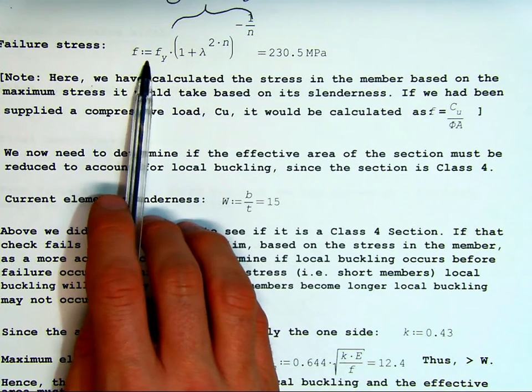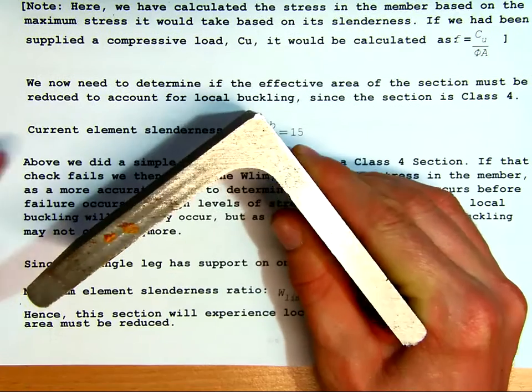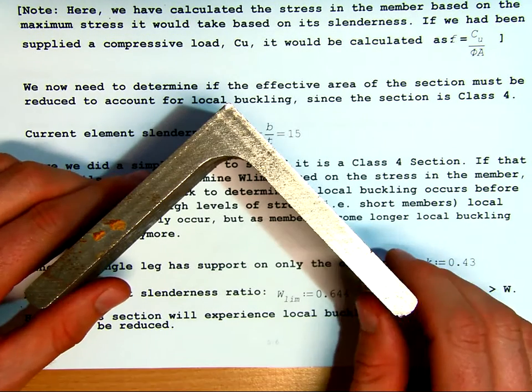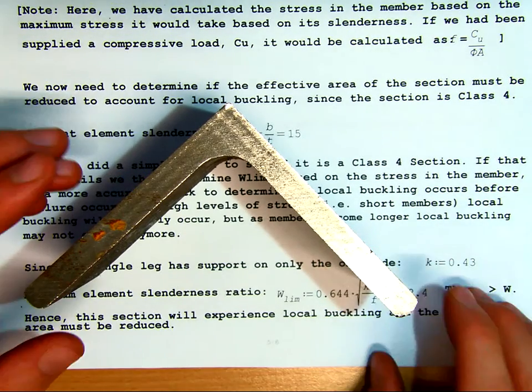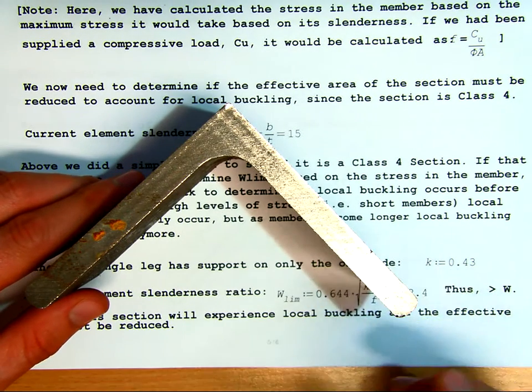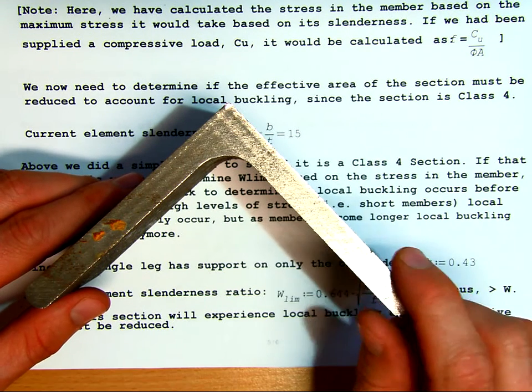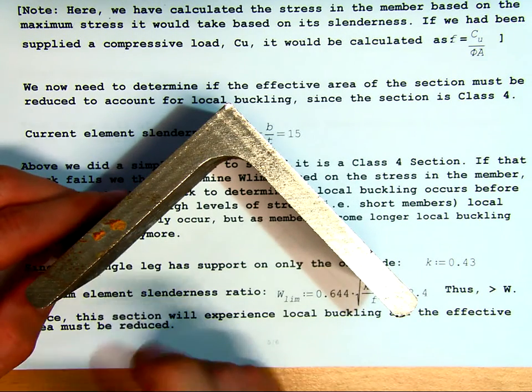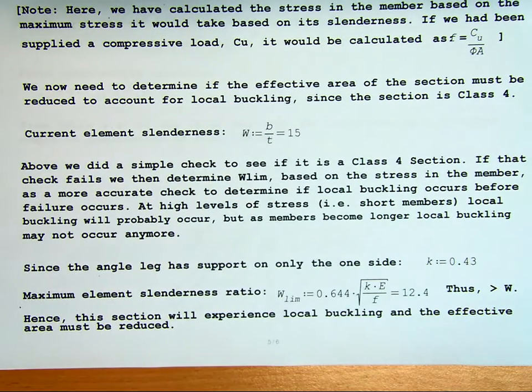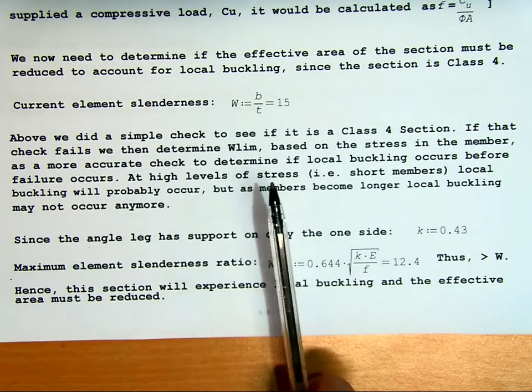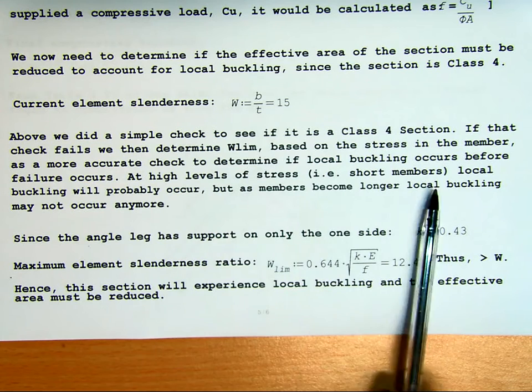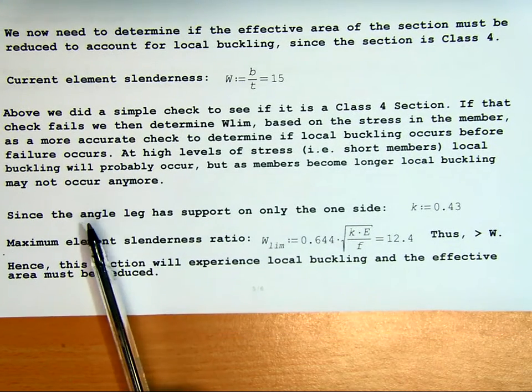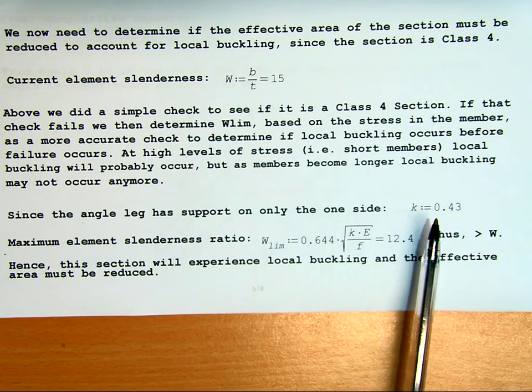As the stress in the member increases at failure, it's more likely to experience local buckling. Let's say we've got this angle here, and it's 2 meters long, it might fail at a certain stress. If it comes down to our 0.75 meter angle we're looking at, it's going to fail at a much higher stress, meaning local buckling is more likely. So we're asking the question is, based on its global failure, is local failure going to occur first, local buckling, or is global failure going to occur? Do we need to update our effective area to account for that? At high stress levels, i.e. short members, local buckling will probably occur. But as members become longer, local buckling may not occur anymore.